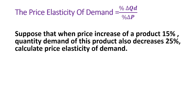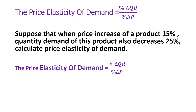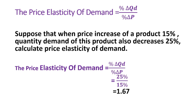We know that price and quantity demanded are negatively related — when price increases, quantity demanded decreases. Using the formula: elasticity equals percentage change in quantity demanded divided by percentage change in price. Given change in quantity demanded = 25% and change in price = 15%, the result equals 1.67. So the price elasticity of demand is 1.67.